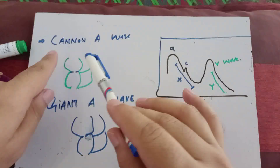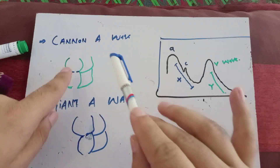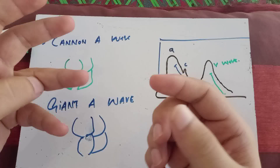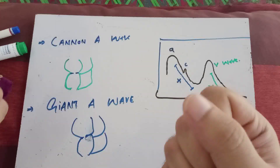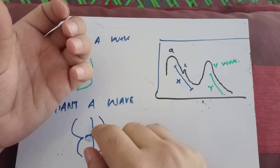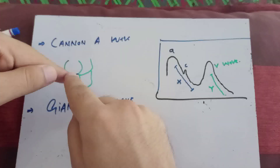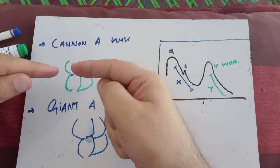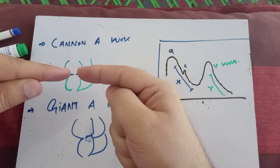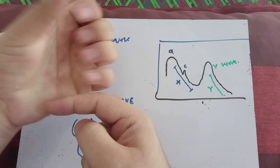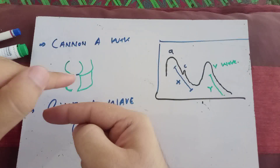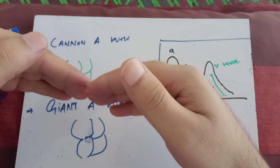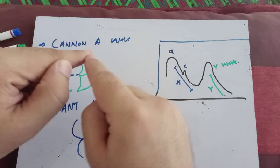Coming to the MCQs, we are able to pick these MCQs now. The cannon A wave and the giant A wave — the cannon A wave is produced in which condition? We already know that it is third degree heart block, or we are having a pacemaker, and there is premature ventricular contraction. Now, the A wave is produced due to atrial contraction against the open tricuspid valve. When the right atrium contracts, some blood moves down and some moves up. But what if the tricuspid valve is closed? If the atria contract against the closed valve, no blood comes down to the right ventricle. All the blood in the right atrium moves upward and produces a very huge tall A wave — that is called the cannon A wave.